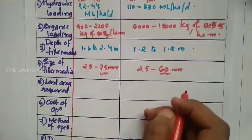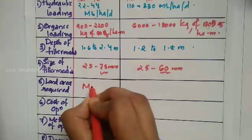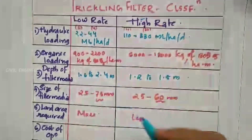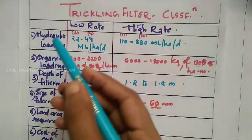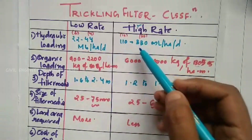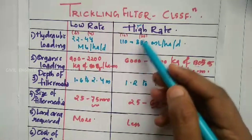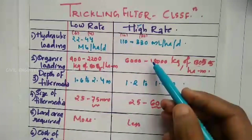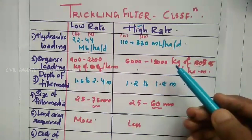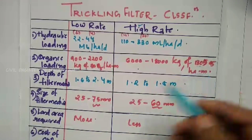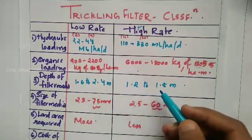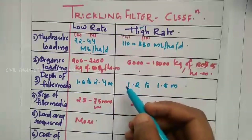Next is land area. Land area required is larger for low rate than high rate. The hydraulic loading for low rate is 22 to 44 megalitres per day, and 110 to 330 for high rate. Organic loading is 900 to 2200 for low rate and 6,000 to 18,000 kg of BOD5 per hectare. The depth of the filter for low rate is 1.6 to 2.4 metres, and high rate is 1.2 to 1.8 metres.